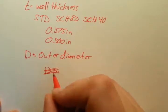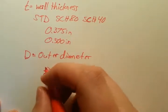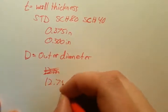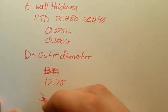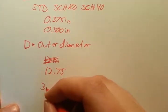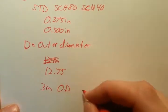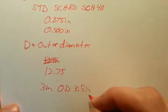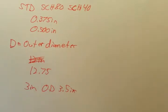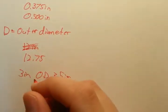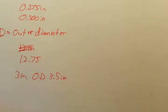I know for like 3 inch pipe, if you say 3 inch pipe, the OD is actually 3.5 inches. So you have to be careful when you're plugging into the formula. All this stuff is in the pipe charts too.